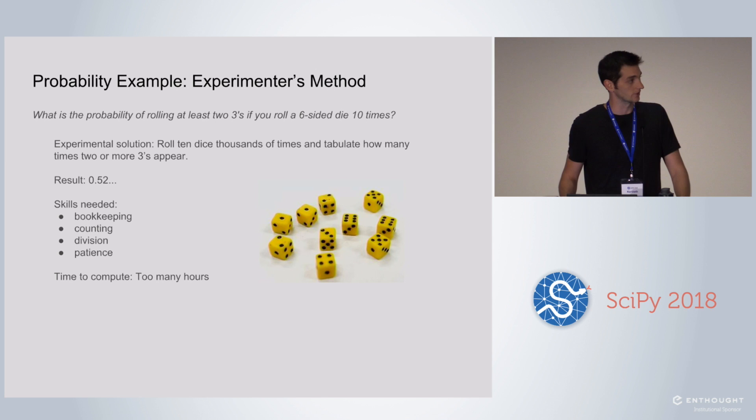One kind of nice way to introduce computational thinking is with an example. This is an example that Jason likes to give of a probability question. If you roll ten dice and you want to see how many times you get at least two threes, what's the probability that you get at least two threes? One way to do this is to run an experiment. You can have ten dice, roll them, count if you get at least two threes or not, and then do that over and over again and you'll get an approximation to the real probability.